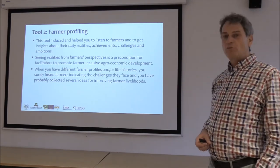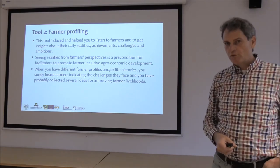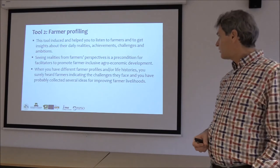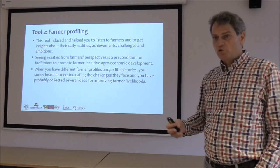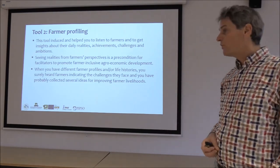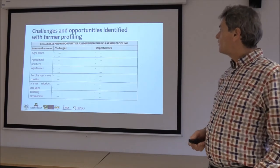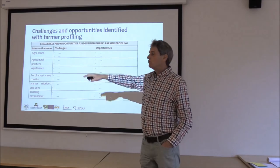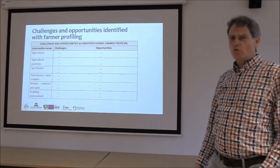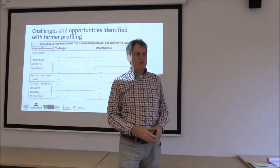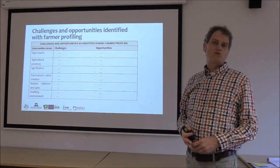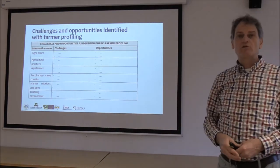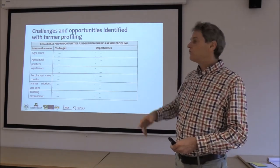The second tool is farmer profiling. Following OPPO principles, we said: go to farmers, go to their fields, talk to them and make several profiles if you can. Farmers have explained their livelihoods and mentioned many challenges, and probably also some opportunities for change. With farmer profiling you can identify challenges and opportunities linked to the six intervention areas. For example, if farmers say they don't have quality seeds, that's a challenge for agro inputs; if they lack storage facilities, it's a challenge for post-harvest value creation.